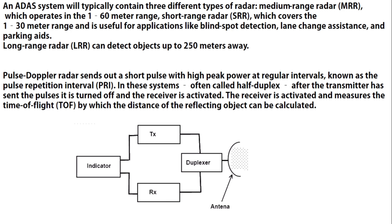A pulse radar sends out a short pulse with high peak power at regular intervals, known as the Pulse Repetition Interval, PRI. These systems are often called half-duplex. After the transmitter sends the pulse, it is turned off and the receiver is activated. The receiver then measures the Time of Flight, TOF, from which the distance of the reflecting object can be calculated.